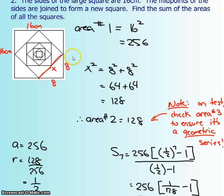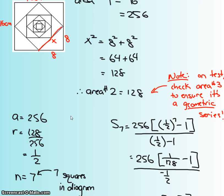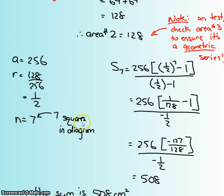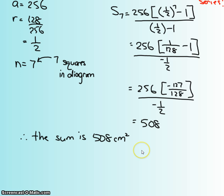...and how many squares are there? There's one, two, three, four, five, six, and seven. Okay, so your n is seven, and then we're just going to plug them all into the formula, and again, solving with BEDMAS, you get 508. So the sum of all the squares in this diagram are 508 centimeters squared.